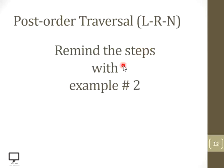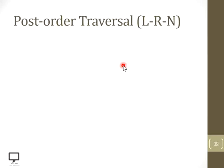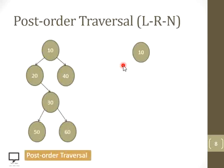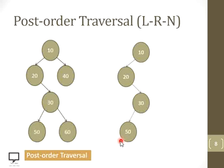Let's move to example 2, following the same steps: left, right, and root. We start with the root node 10 and check whether it has a left child — yes, step down to 20. Make 20 the root node and check for its left child — no. Check for its right child — yes, step down to 30. Make 30 the root node, check for its left child — yes, step down to 50. For 50, no left child and no right child, so process 50.